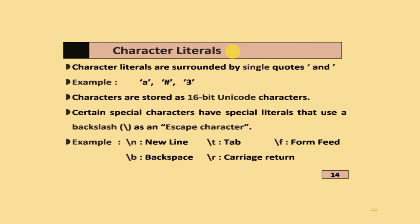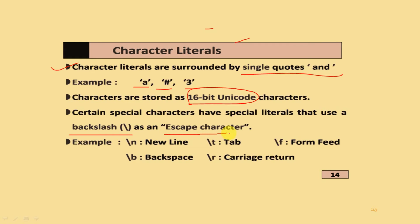Character literals are surrounded by single quotation marks - for example, 'a', '#', or '3'. Characters are stored in 16-bit Unicode character sets. Certain special characters use a backslash and are called escape characters: use \n for a new line, \t for tab, \f for form feed, \b for backspace, and \r for carriage return.